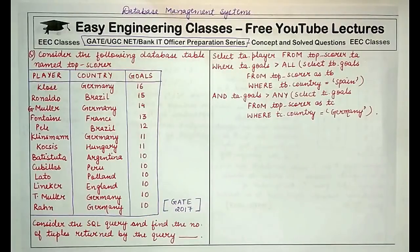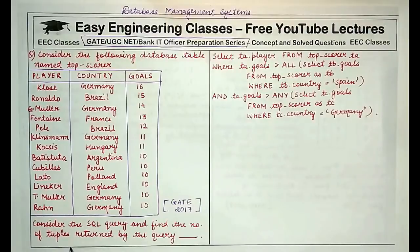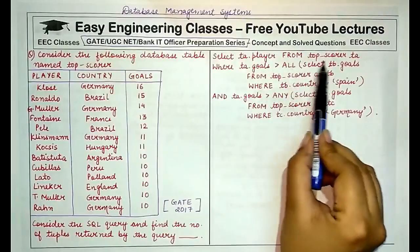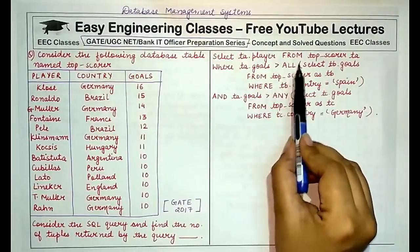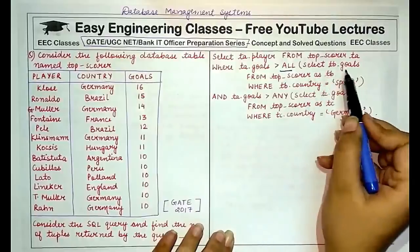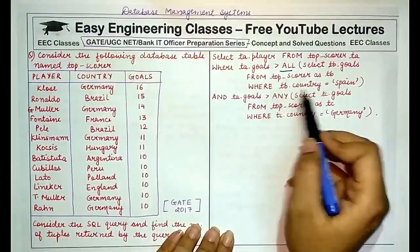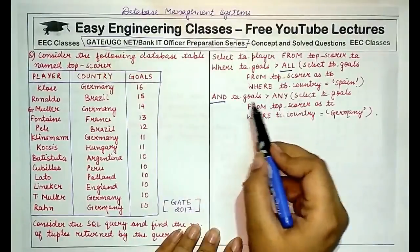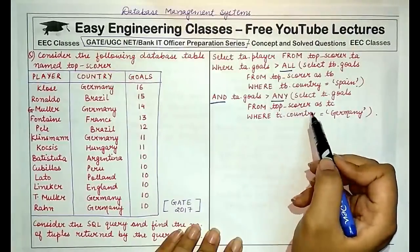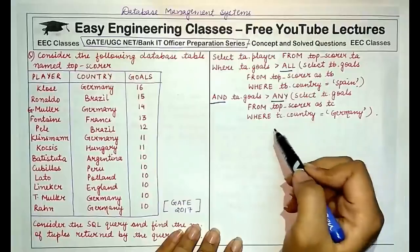This is a question from Database Management System that appeared in GATE 2017. It gives you a database table known as Top Scorer and asks you to consider the given SQL query and find the number of tuples returned by the query. The query selects player from top scorer where goals are greater than all the values in a sub query, which selects goals from top scorer where country is Spain and goals are greater than any of the values in another sub query that selects goals from top scorer where country is Germany.